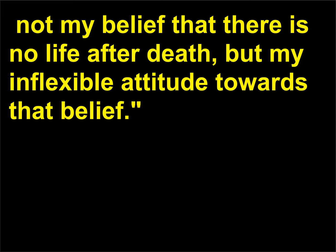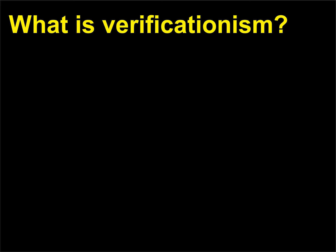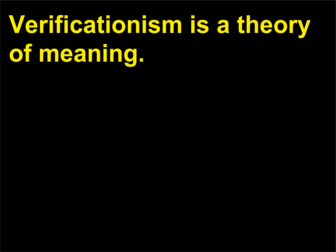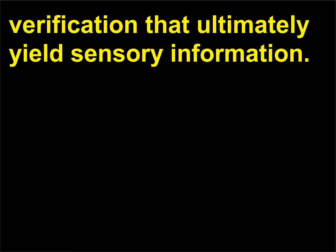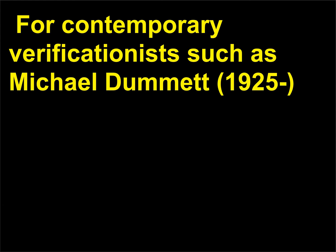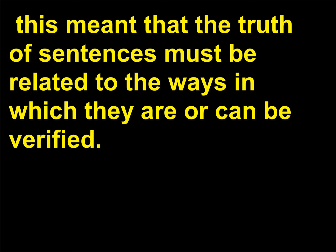What is verificationism? Verificationism is a theory of meaning. The meaning of a statement is its empirical methods of verification that ultimately yields sensory information. For contemporary verificationists such as Michael Dummett, 1925, this meant that the truth of sentences must be related to the ways in which they are or can be verified.